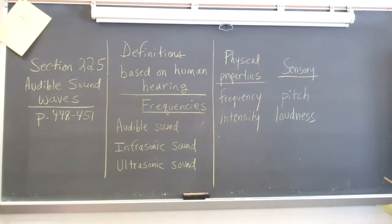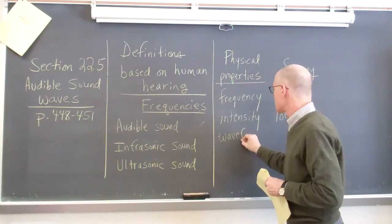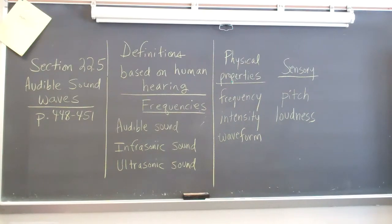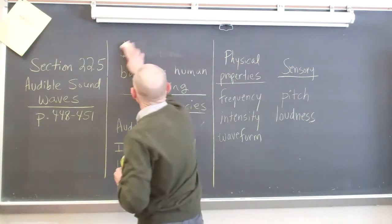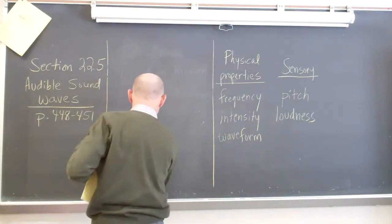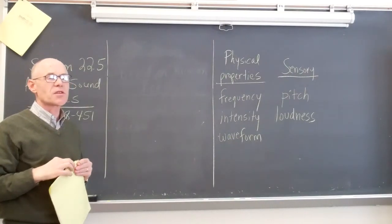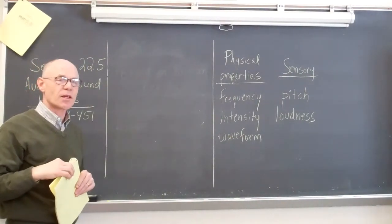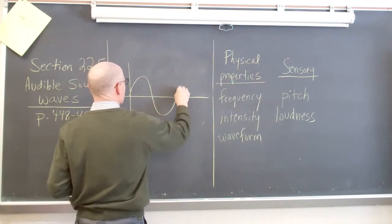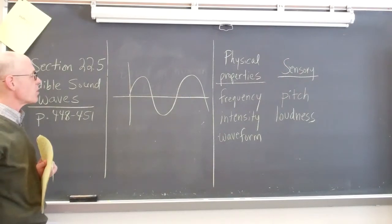And then the third different physical property we're going to talk about is called wave form. What we mean by wave form - we have talked about this a little bit. Let me just draw a sketch. At the very beginning of chapter 22, we sketched out what a sound would look like if you graphed it based on the variations of pressure. We graphed a wave that looked like that. That's what we would call the wave form - what does the wave look like in terms of the pressure variations?